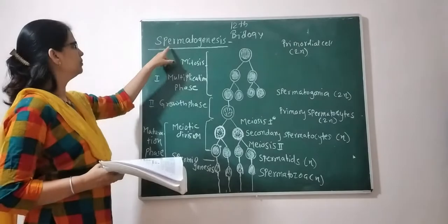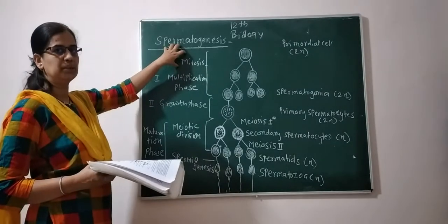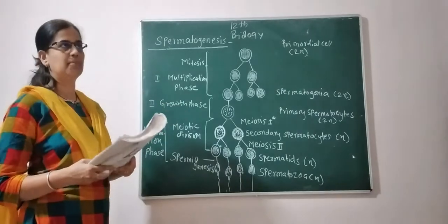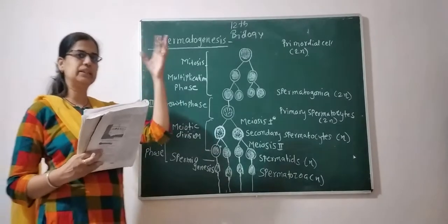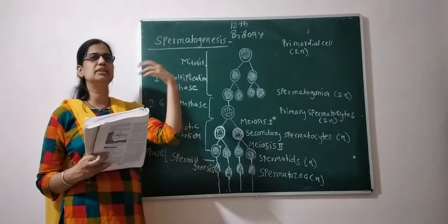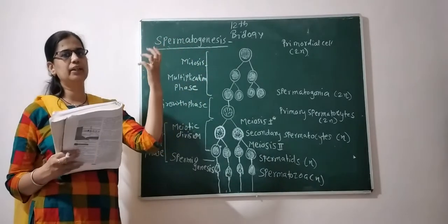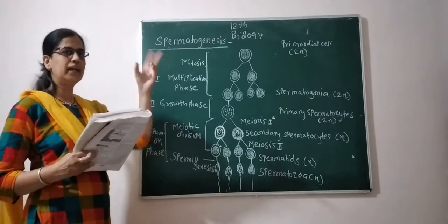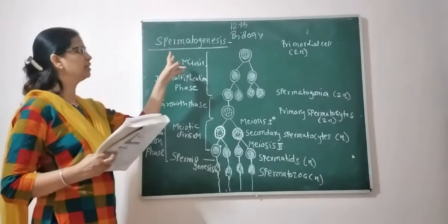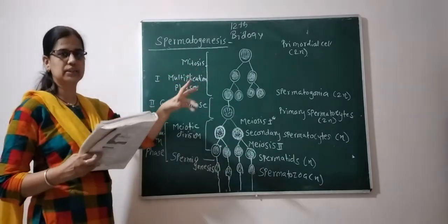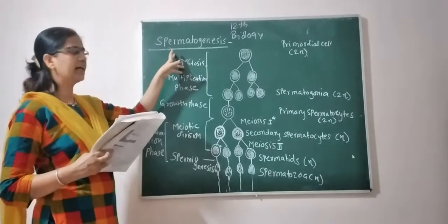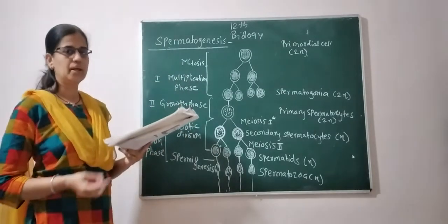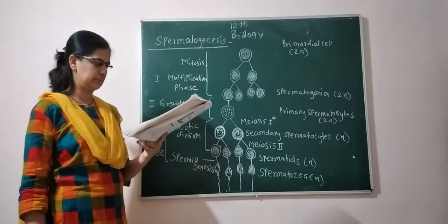Sperm taayar hoon ea chai process se spermatogenesis. Gametogenesis he gametes taayar hoon ea chai process hain. Males madhe sperm taayar hoon aadi females madhe ovum taayar hoon — tila aapad gametogenesis madhe. Manja tohdi processes: females madhe oogenesis, males madhe spermatogenesis. Ata aapad wakada rho spermatogenesis.